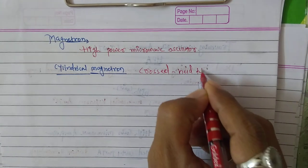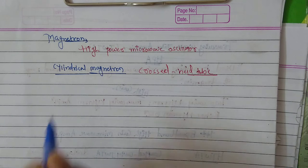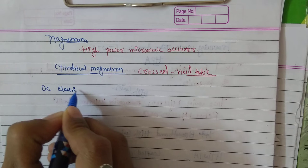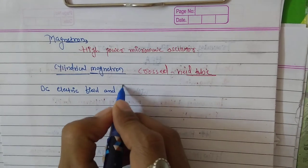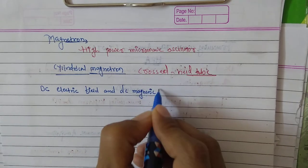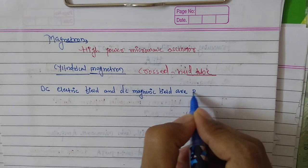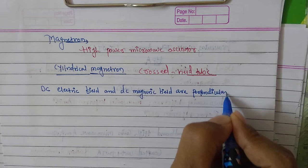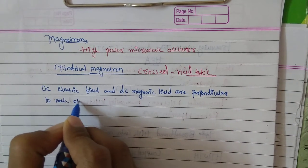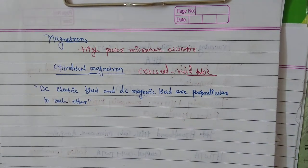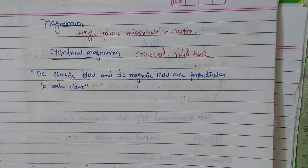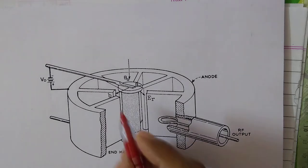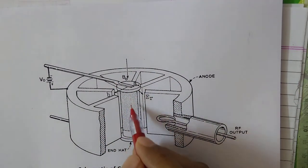Why is this called a crossed field microwave tube? Because in this tube, the DC electric field and DC magnetic field are perpendicular to each other — that is why this tube is called a crossed field tube. There are various types of crossed field tubes. Because of the crossed field, the DC electric and DC magnetic fields are crossed between cathode and anode.